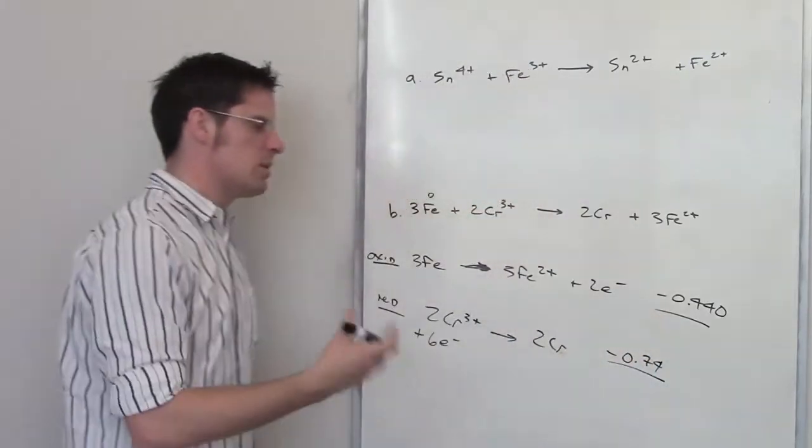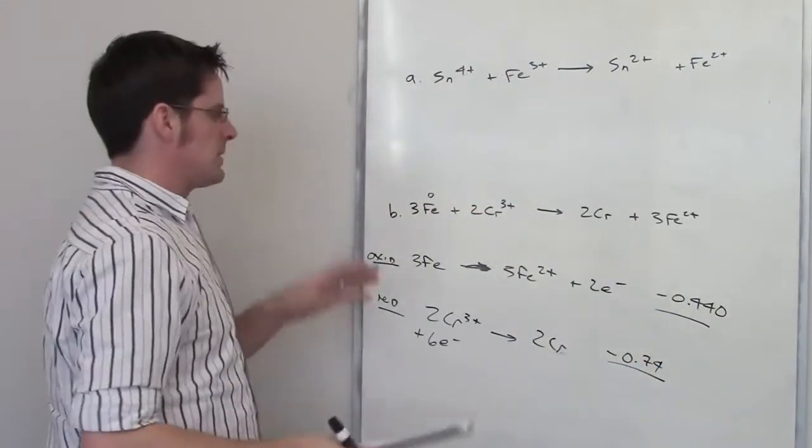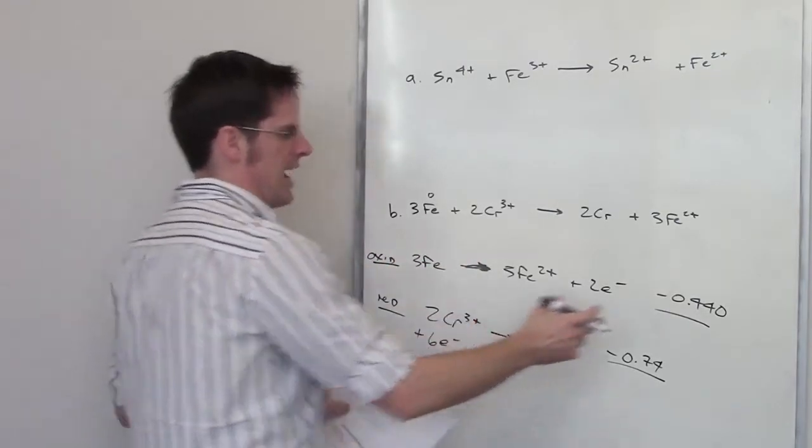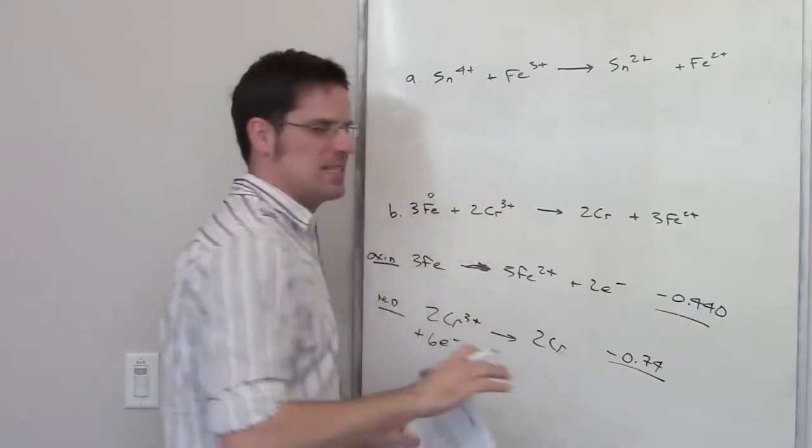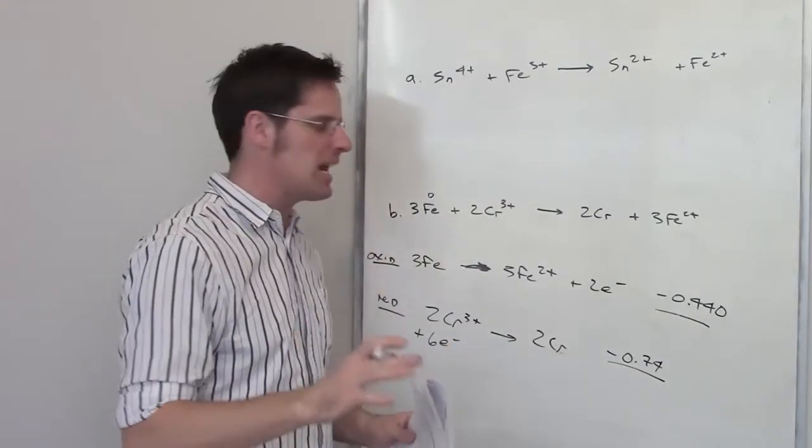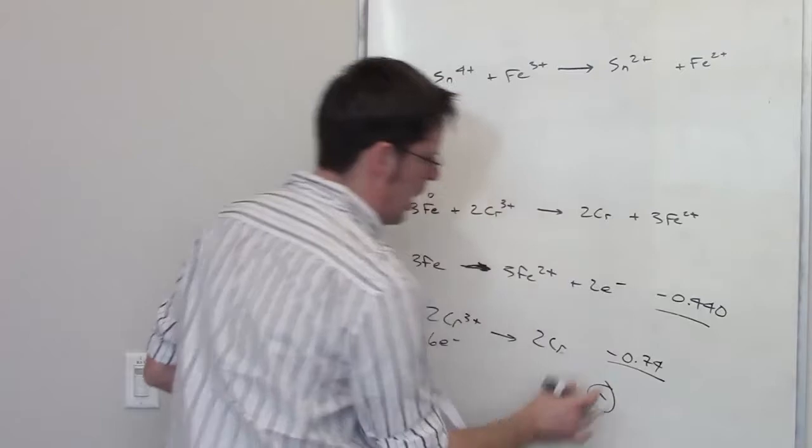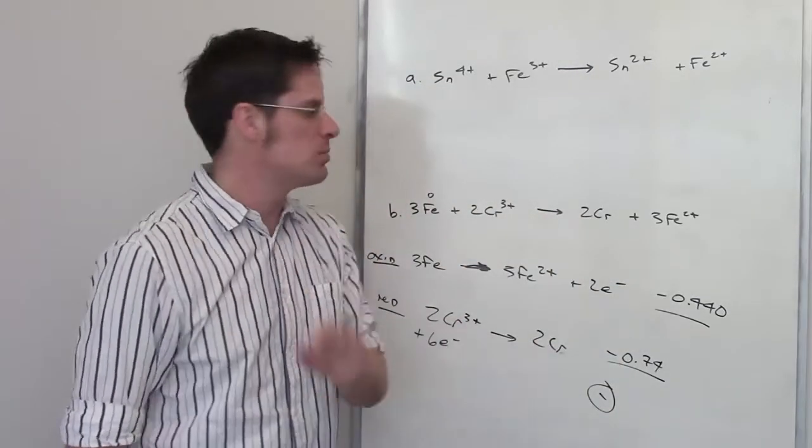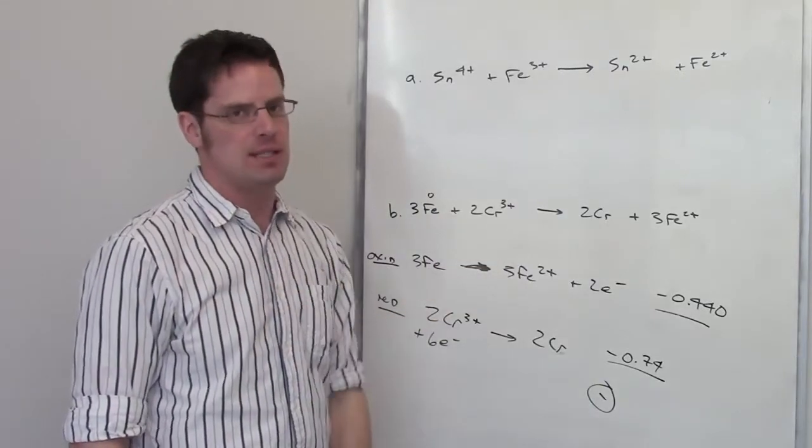So now to determine the overall electron potential for this process, I just have to add the two together. You'll notice that if I add this to that, I don't actually know what it comes out to be. It definitely comes out to be a negative number. Because the overall addition is negative, negative means non-spontaneous. So this option will not be spontaneous.